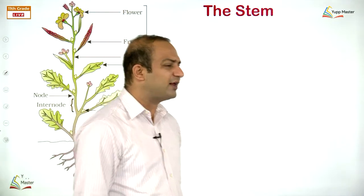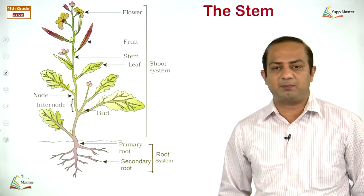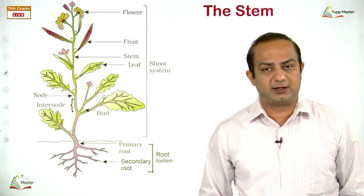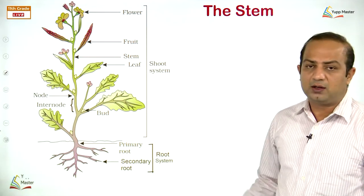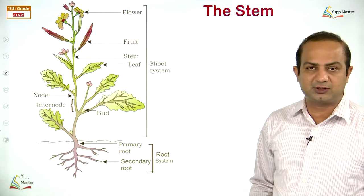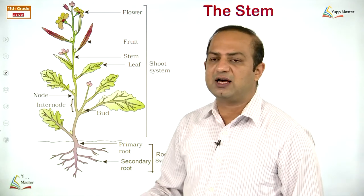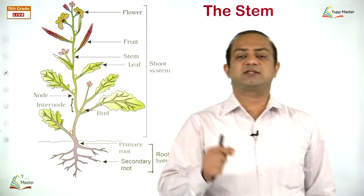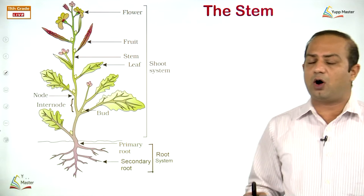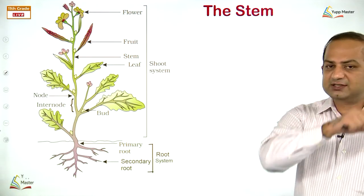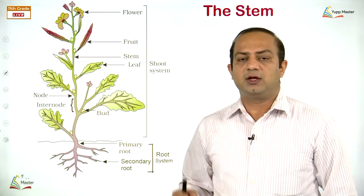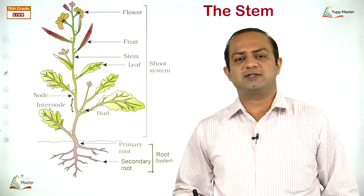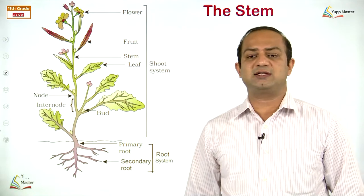We begin with the next topic in morphology of flowering plants — we are studying the stem. This diagram of a mustard plant was made in the very first class of morphology. It shows two important things: the root system and the shoot system. In morphology, the characters studied are either vegetative or reproductive.